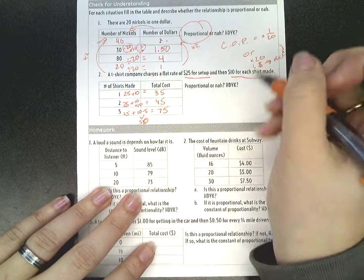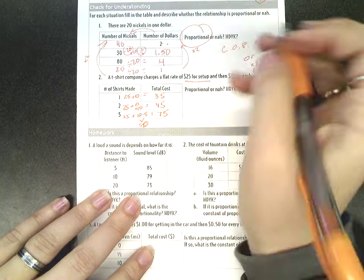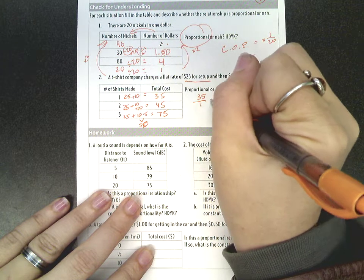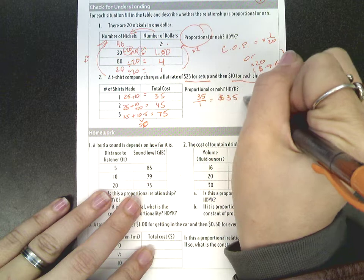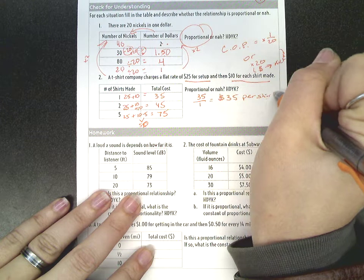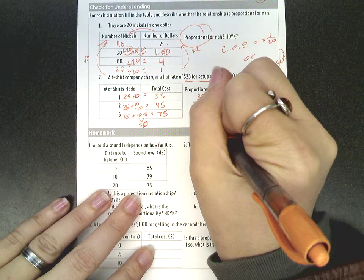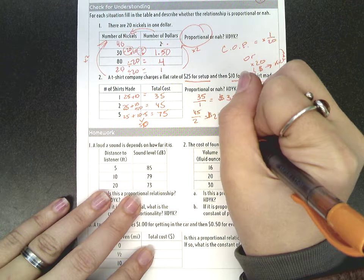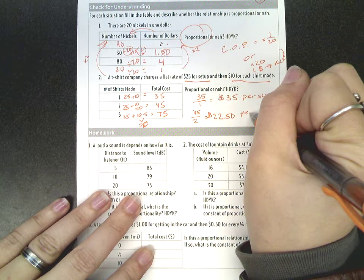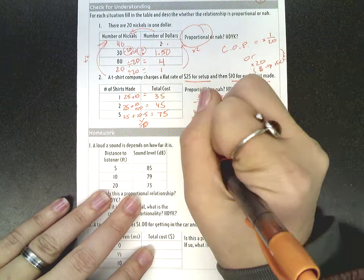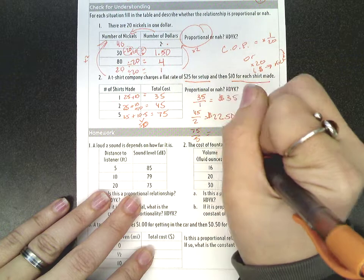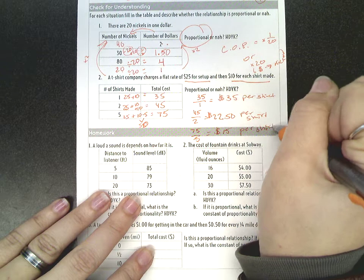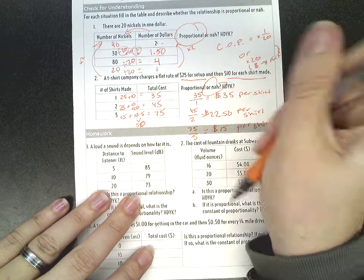Now is this proportional? Let's look at some unit rates here. 35 to 1, that's going to just be $35 per shirt. 45 to 2, well that's going to be $22.50 per shirt. And if I do 75 to 5, that's going to be $15 per shirt. So we do not have the same unit rates. No, these are not proportional.